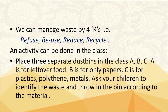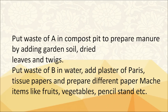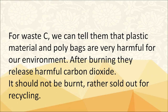An activity can be done in class. The teacher can place three separate dustbins in the class named A, B and C. Dustbin A is for leftover food, B is for papers only, and C is for plastics, polythene and metals. Ask children to identify the waste and throw it in the bin according to the material. Put waste from A in a compost pit to prepare manure by adding garden soil, dried leaves and twigs. Put waste from B in water, add plaster of Paris and tissue paper, and prepare different paper-mache items like fruits, vegetables and pencil stamps. For waste C, explain that plastic material and polybags are very harmful for the environment — after burning they release harmful carbon dioxide. They should not be burned but rather sold out for recycling.